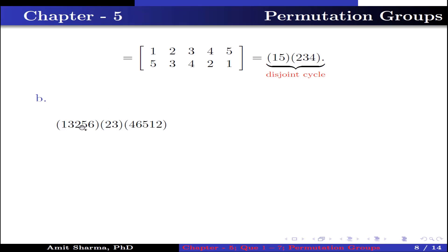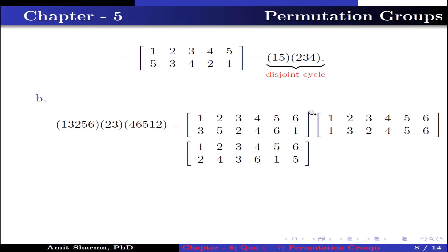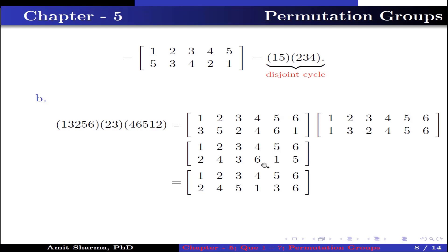Part B: the product of (1 3 2 5 6)(2 3 4 6 5 1 2). Computing: 1→2, 2→3→2 so 1 has image 2; 2→4, 4→4→4 so 2 has image 4; 3→3, 3→2→5 so 3 has image 5; 4→6, 6→6→1 so 4 has image 1; 5→1, 1→1→3 so 5 has image 3; 6→5, 5→5→6 so 6 has image 6. Written as disjoint cycles: (1 2 4)(3 5).